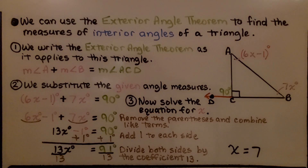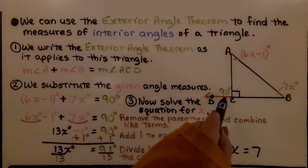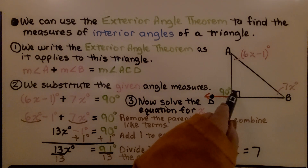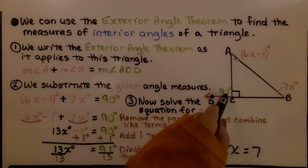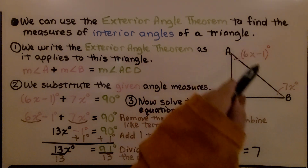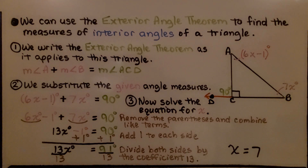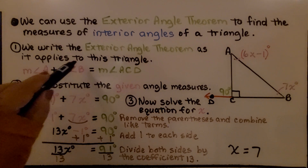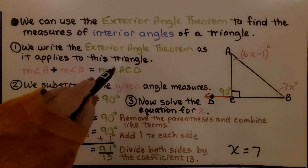Let's look at this diagram. We have a triangle with an extension. We know this is a right triangle because we see the box here, and we know that angle ACD is 90 degrees — it's also given. The measure of angle A is 6x minus 1 degree, and the measure of angle B is 7x degrees. We use the exterior angle theorem: the measure of angle A plus the measure of angle B equals the measure of angle ACD.